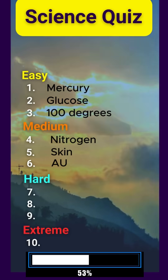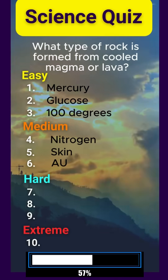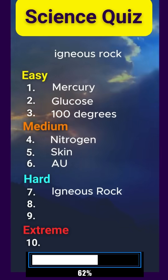Seventh question. What type of rock is formed from cooled magma or lava? Igneous rock.